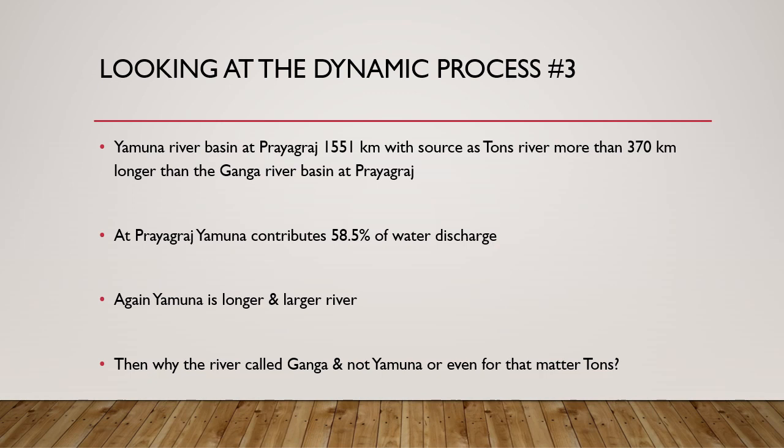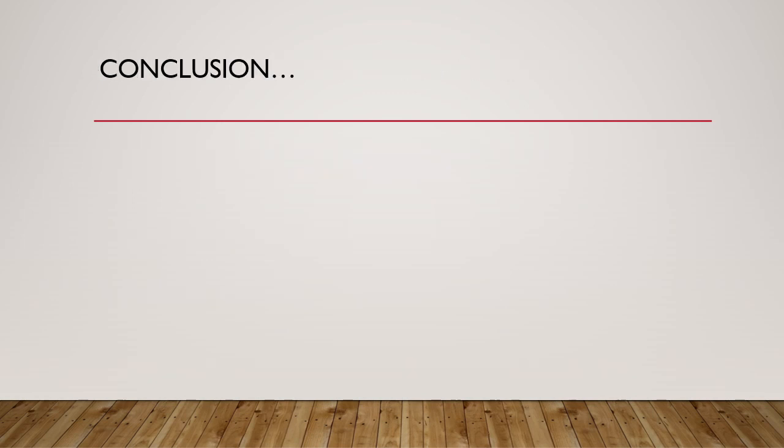Yamuna and Ganga are both ancient rivers that have been meeting near Prayagraj for ages. However, around 4,000 to 5,000 years back, the Saraswati river changed its course and started merging with Yamuna, making Yamuna bigger and longer. The combined entity of Ganga and Yamuna existed far longer than this time period, so even though Yamuna is now much longer and larger, the naming convention has not changed, and the river at the Prayagraj confluence is still called Ganga.